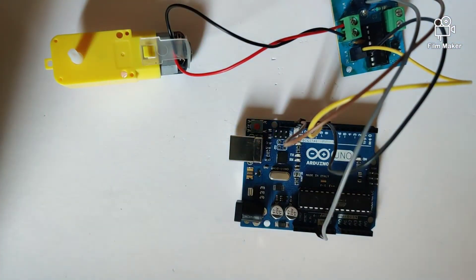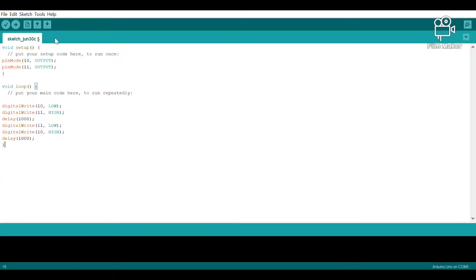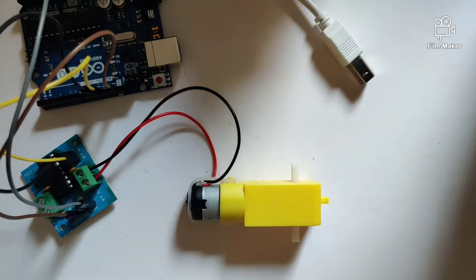Now let's quickly take a look at the code required for the motor to run. This is our program over here. In our void setup, we are specifying the two digital pins we have used as output. And we are giving a command in the void loop to go high or low according to the pin number. So let's try uploading the program onto our circuit and see how our circuit responds.